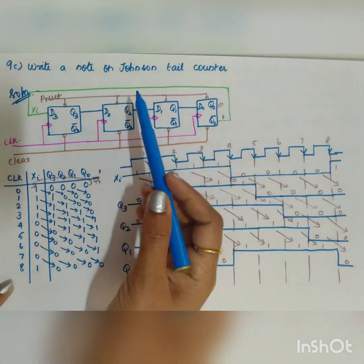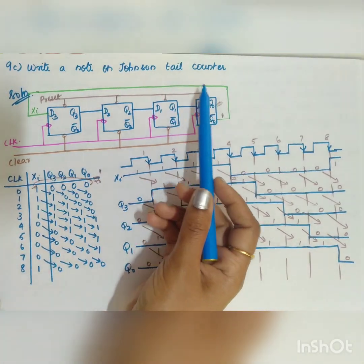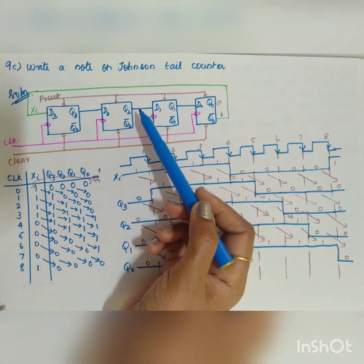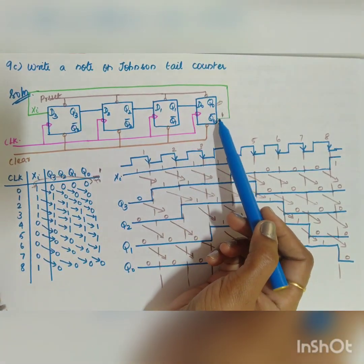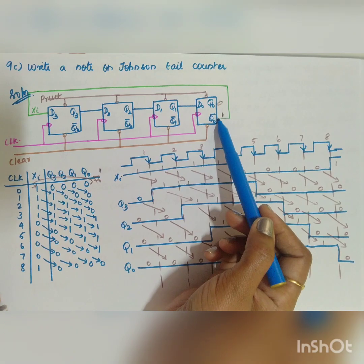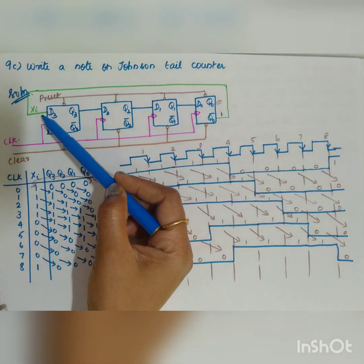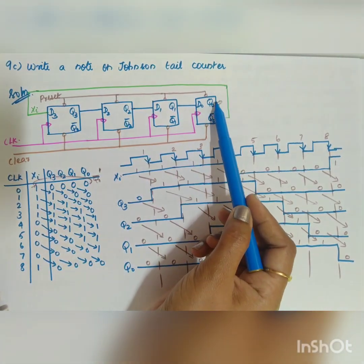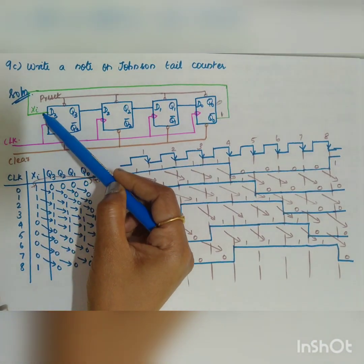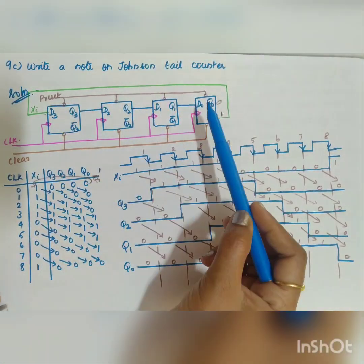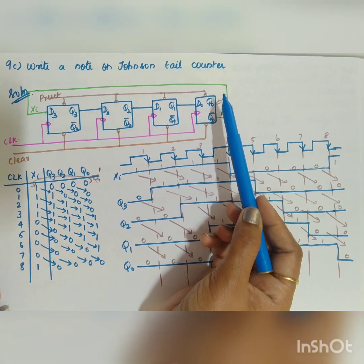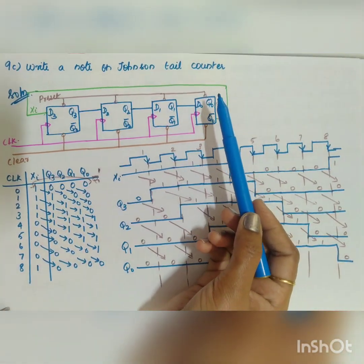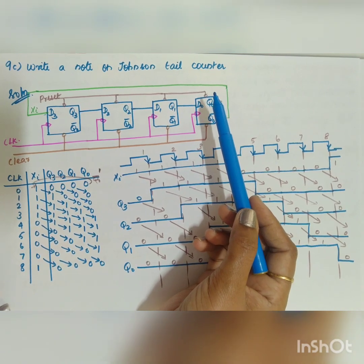The next question is: write a note on the Johnson Tail Counter. The difference between the ring counter and the Johnson Tail Counter is that the output Q0 bar is fed to the serial input, whereas in the case of the ring counter, Q0 itself is fed back as the input. It is also called the modified ring counter, twisted ring counter, or twisted counter.